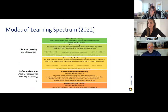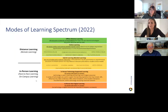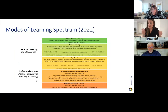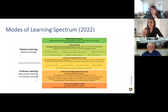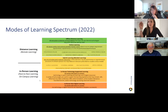Most of what we see in current post-secondary education happens in the three middle categories: in-person technology-supported learning, hybrid learning, and online learning. We put the dividing line between in-person learning and distance learning right through hybrid learning because hybrid involves a mix of both. Within the big bucket categories of online learning and hybrid learning, there are smaller terms like synchronous online, self-paced asynchronous, and combined synchronous and asynchronous — these describe variations that can exist within the bucket of online learning.